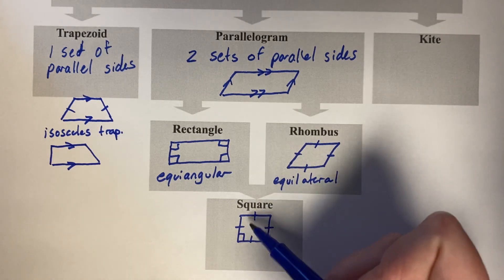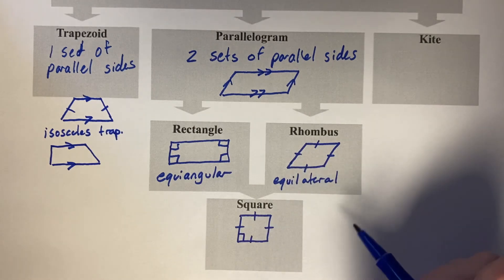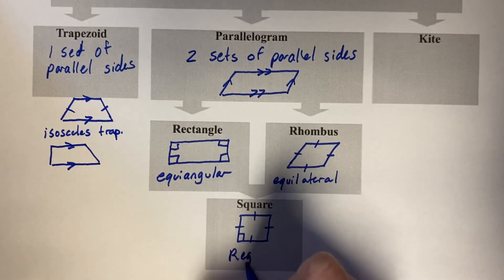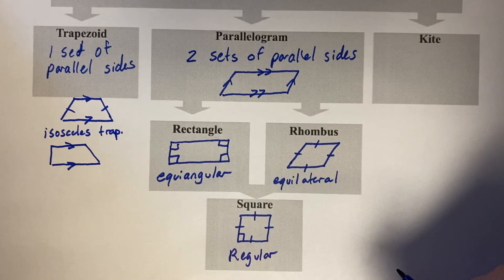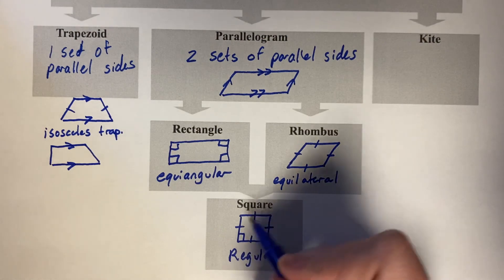If it has both features, if it's equiangular and equilateral, it's called a regular figure. It means that all the angles and all the sides are the same. All the angles are the same, all the sides are the same.